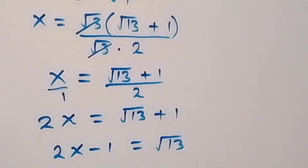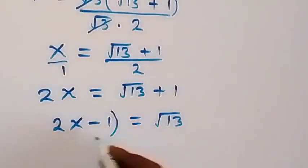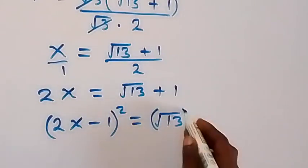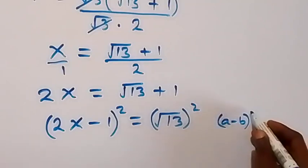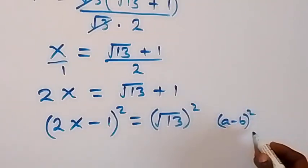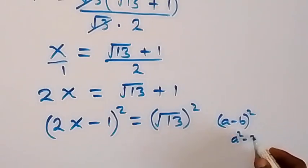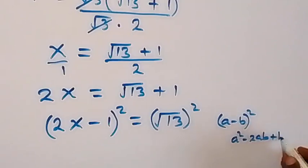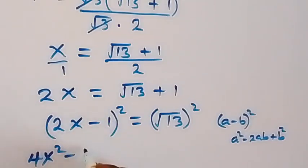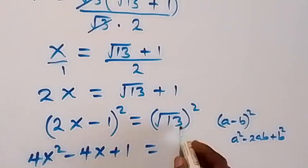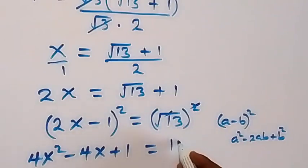Now let's square both sides. The left side uses (a − b)² = a² − 2ab + b², giving (2x)² − 2(2x)(1) + 1² = 4x² − 4x + 1. The right side: squaring √13 cancels the root, giving 13.